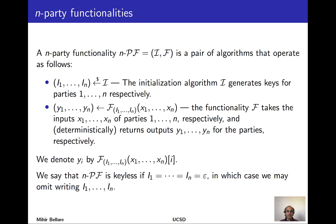We come now to multi-party secure computation, generalizing our prior setting of two parties to one where there are n parties — three or more — each with their own private inputs and wanting to jointly compute some function on all of them while preserving privacy to the best extent possible. We'll start by talking about functionalities, which represent the task or the function the parties are trying to compute. An n-party functionality is a pair of algorithms: one is an initialization that generates keys or long-term inputs for each of the n parties.